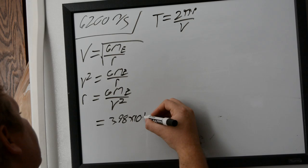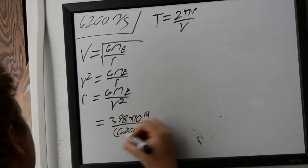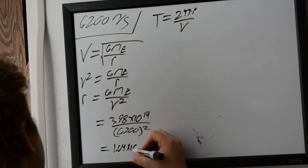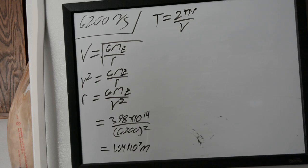Over our velocity squared, which is 6200 meters per second squared. So we do this math, and we find out that our radius is equal to 1.04 × 10^7 meters.